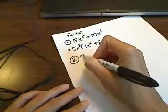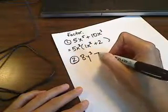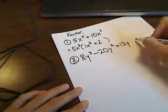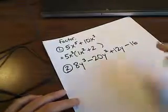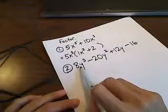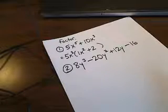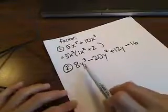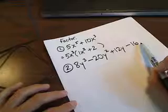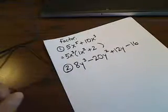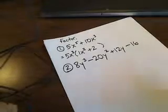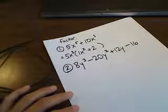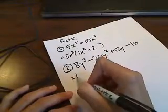Let's try another one: 8y³ minus 20y² plus 12y minus 16. There are four terms here. You want to look at what every term shares in common. The first three terms have y's but the last one doesn't, so there's no variable common to all of them. However, looking at the numbers 8, 20, 12, and 16, the largest number they all share is 4, so 4 is our greatest common factor.